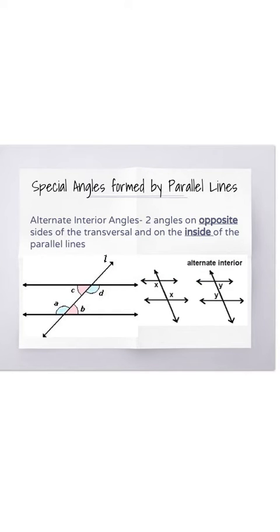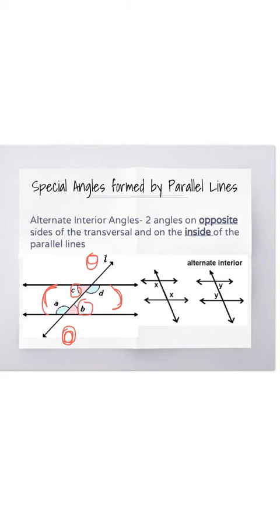Alternate interior angles are two angles that are on opposite sides of that transversal line, but they're on the inside of the parallel lines. If you look at the picture on the left, you have pink angles which are C and B. These are examples of alternate interior angles because they are on opposite sides of that transversal line, but they are also inside the parallel lines. Then you have angles D and A, which are also alternate interior angles because they're on opposite sides of that intersecting transversal line.